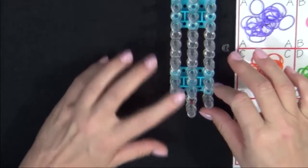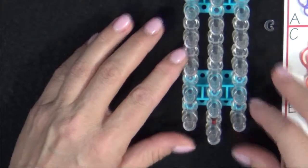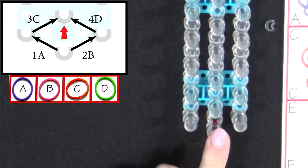Place your loom so that the red arrow is pointing away from you. We'll start by placing the first four bands on the loom. We'll start from the center pin.